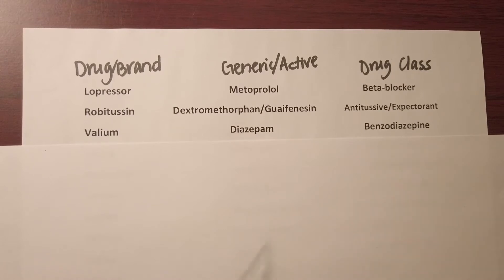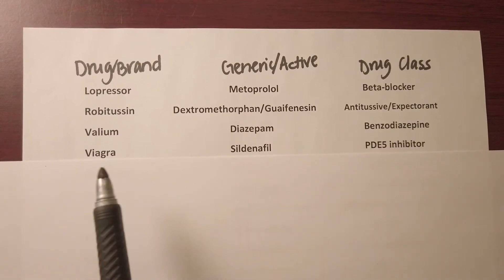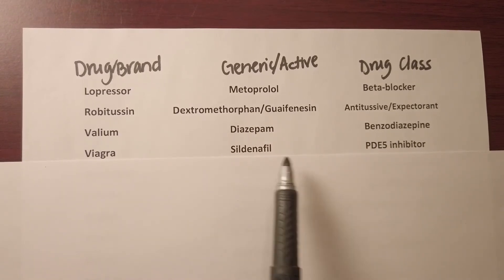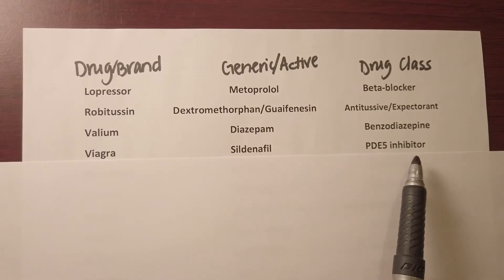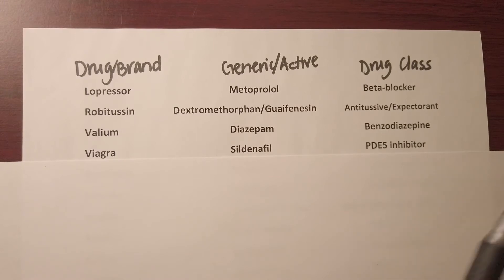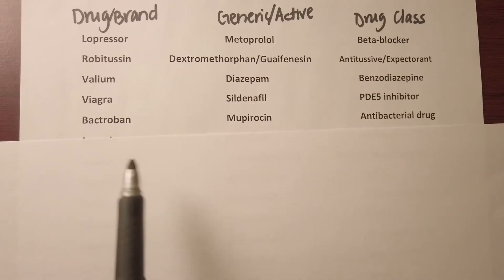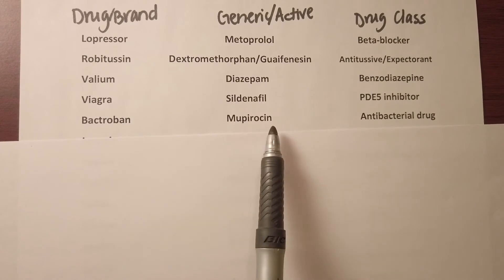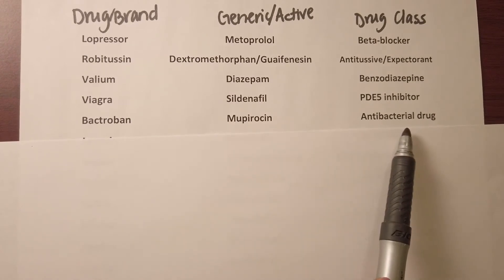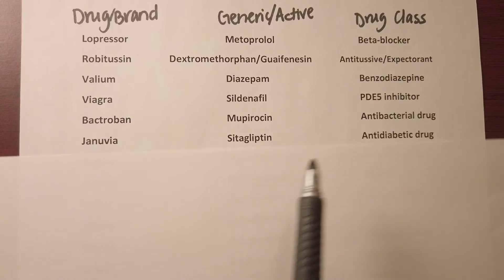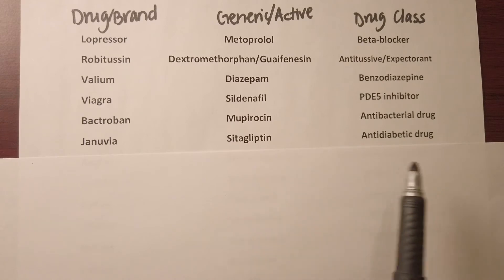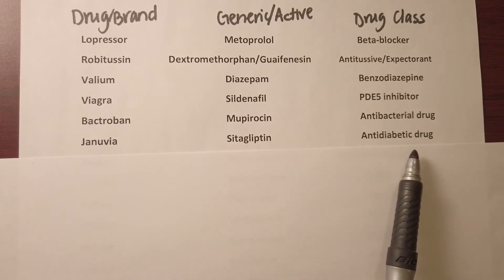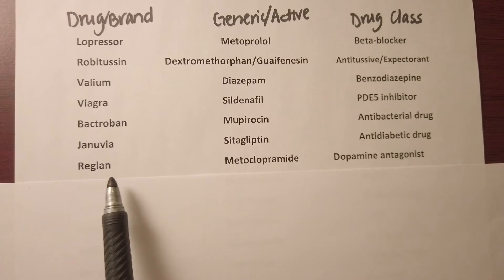Viagra, generic name sildenafil, is a PDE5 inhibitor used for erectile dysfunction. Bactroban, generic name mupirocin, is an antibacterial drug. Januvia, generic name sitagliptin, is an antidiabetic drug. Reglan —